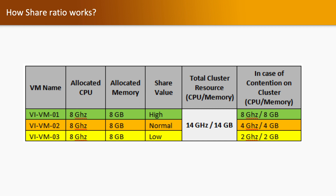How share ratio works: suppose you have three virtual machines — VM1, VM2, and VM3. VM1 is configured as high, VM2 as normal, and VM3 as low. All have 8 GB memory each. In case of contention, VM1 with high share gets 100% resources — it gets 8 GB of memory. VM2 configured as normal gets 50% — it gets 4 GB of RAM. VM3 configured as low gets 25% — its 8 GB is reduced to 2 GB. That is how the share value works.